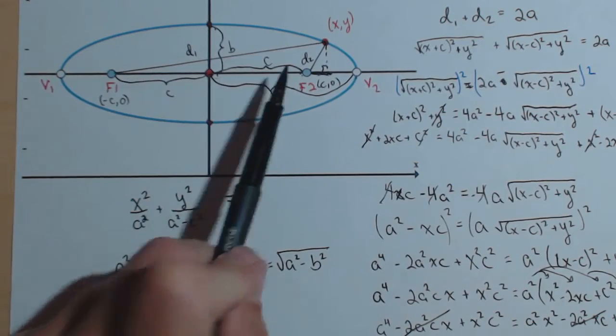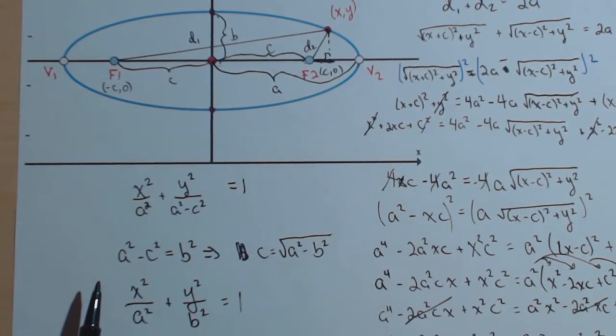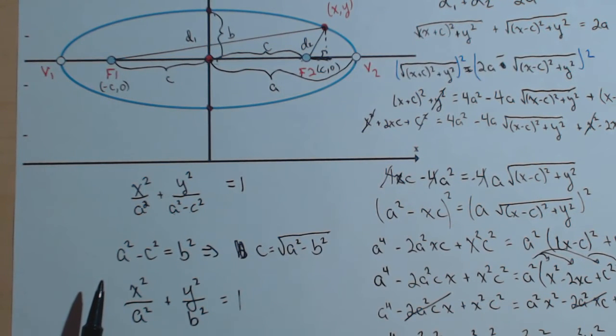Also, a is always going to be larger than c, so we know a squared will be larger than c squared, so we know that that's always going to be a positive value.